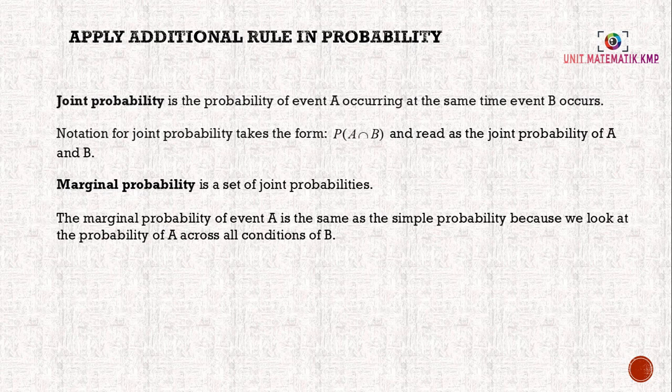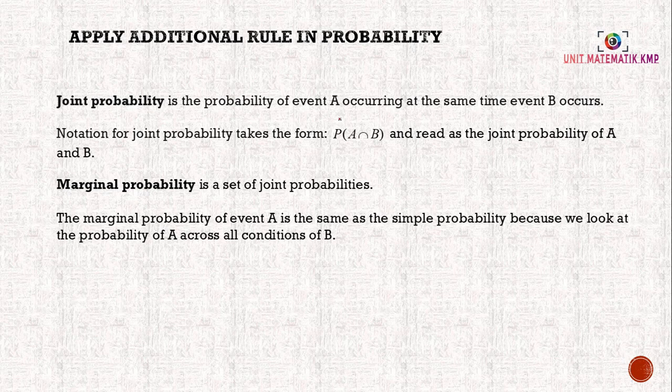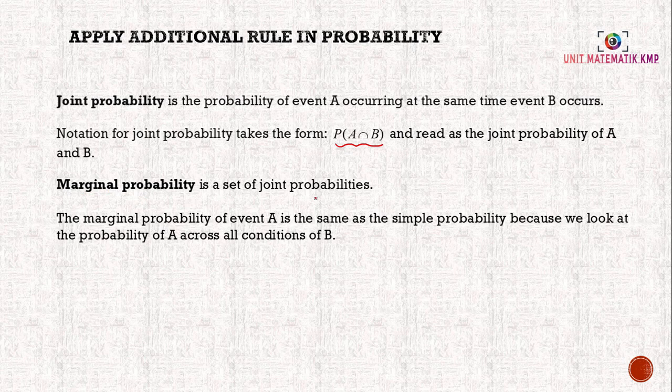Apply additional rule in probability. Joint probability is the probability of event A occurring at the same time event B occurs. Notation for joint probability takes the form P(A ∩ B). This is what we call the joint probability, read as the joint probability of A and B. Marginal probability is a set of joint probability. The marginal probability of event A is the same as the simple probability because we look at the probability of A across all conditions of B.